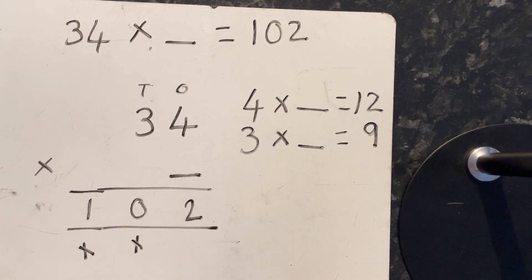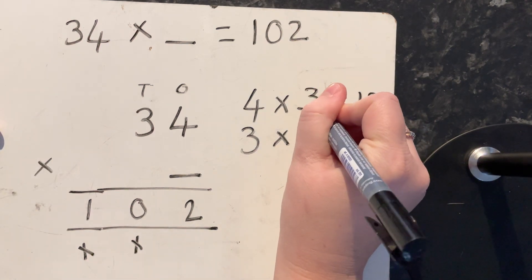Now I need to solve that. That's fine, because we know our 4 times tables and our 3 times tables. How many lots of 4 does it take us to get to 12? Let's see: 4, 8, 12. I think that's 3.